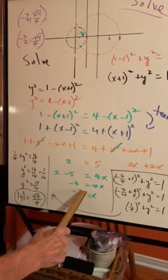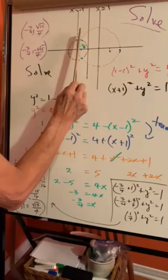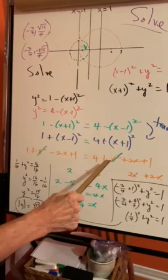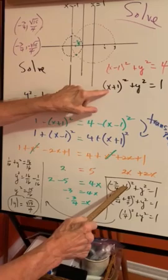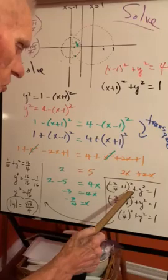Let's go back to the picture. So x is negative three quarters in two places over here. Now we have to find y. So we'll go back down and I'm going to substitute it in here. This is -3/4 + 1 + y² = 1.